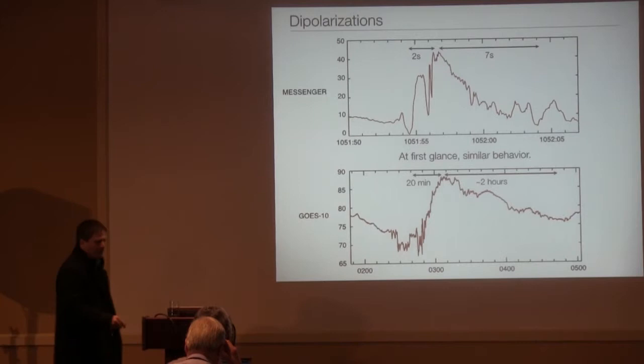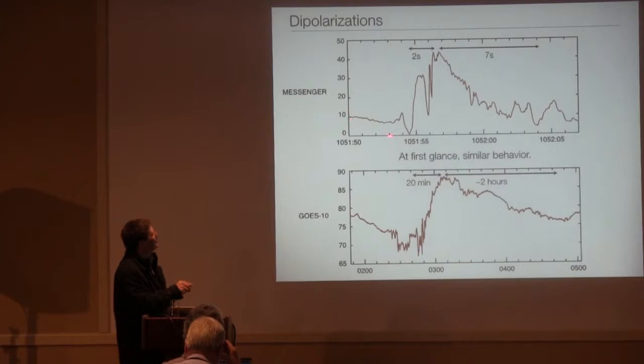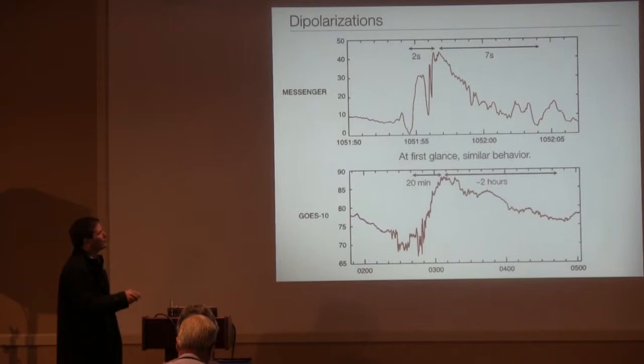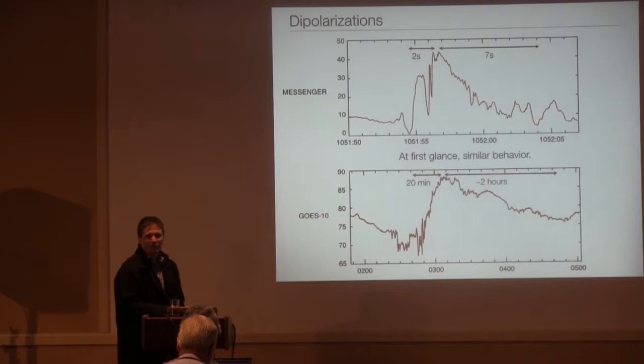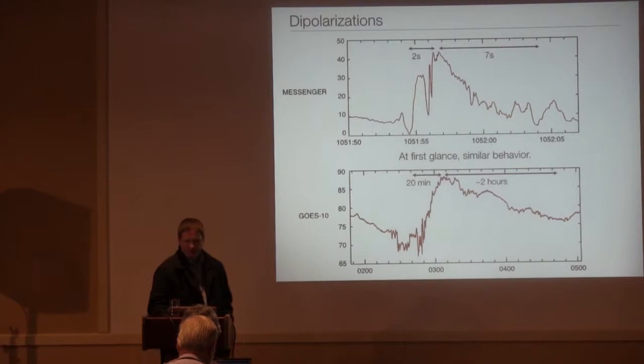The other thing that is different is the amplitude. At MESSENGER, you start with a five nanotesla stretched field. It rises up to 40, 50 nanotesla. That's a factor of 10 increase in the field strength and rapidly goes down. At Earth, it's a much smaller increase. And we see that with all aspects of Mercury dynamics. FTEs are much larger comparatively and plasmoids and flux ropes and so on.